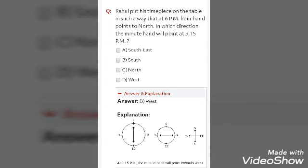Now, let us come to the next question. Rahul put his timepiece on the table in such a way that at 6 p.m. hour hand points to the north. In which direction the minute hand will point at 9.15 p.m.? Again, there is a sum of direction. Now, you can see I have shown north, east, west and south direction by arrow sign. So you have to do the same so that it will be easy for you to solve.